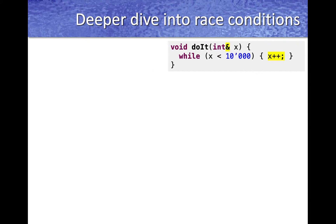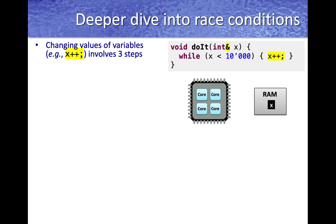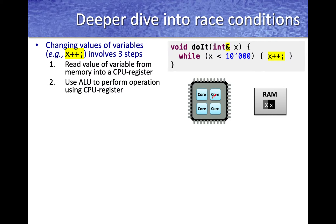Let's look at this in a little more detail. Here we have the variable x and we are trying to modify it repeatedly in a while loop. Keep in mind that when we are trying to modify a variable, modifications essentially involve three steps. We have only one C++ instruction, x++, but internally the CPU has to do three operations to accomplish that increment. First, it has to read the variable from memory into a CPU register so that the ALU can perform the increment operation. The ALU performs the operation and the resulting value is stored back into memory, and this cycle continues for each iteration of the while loop.